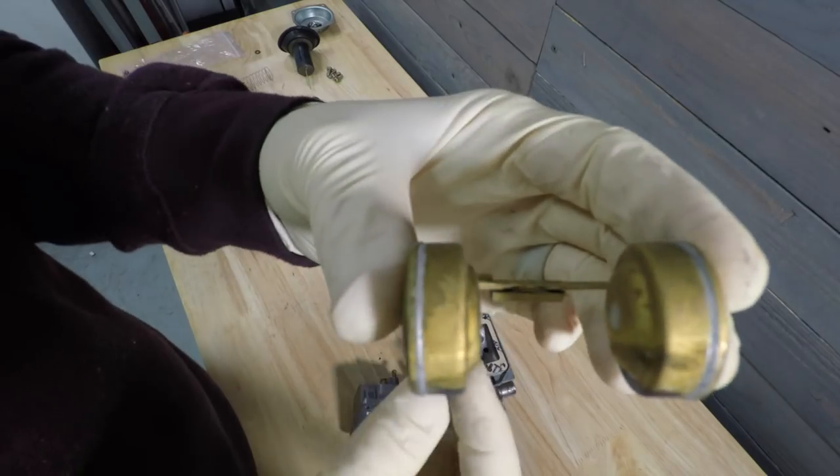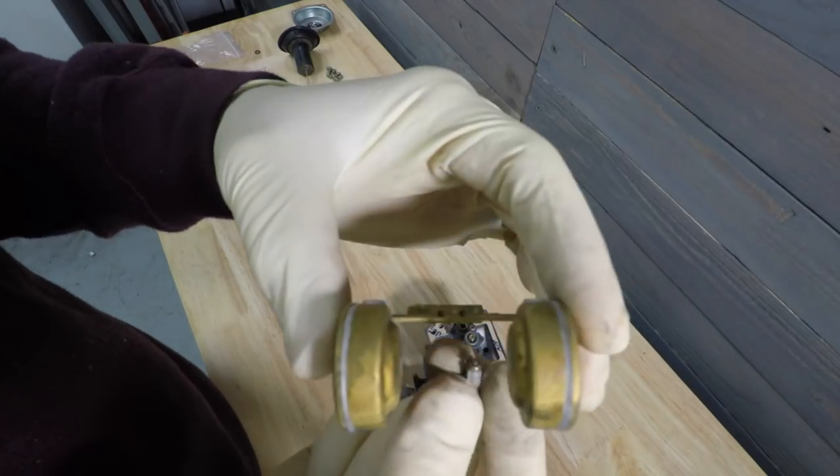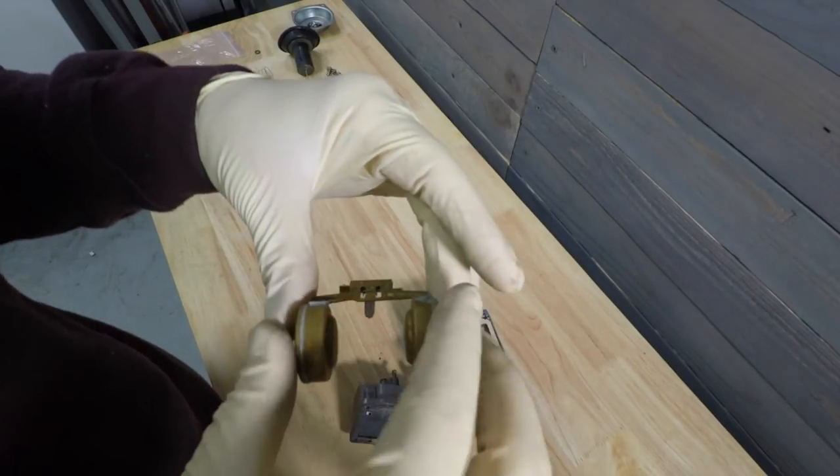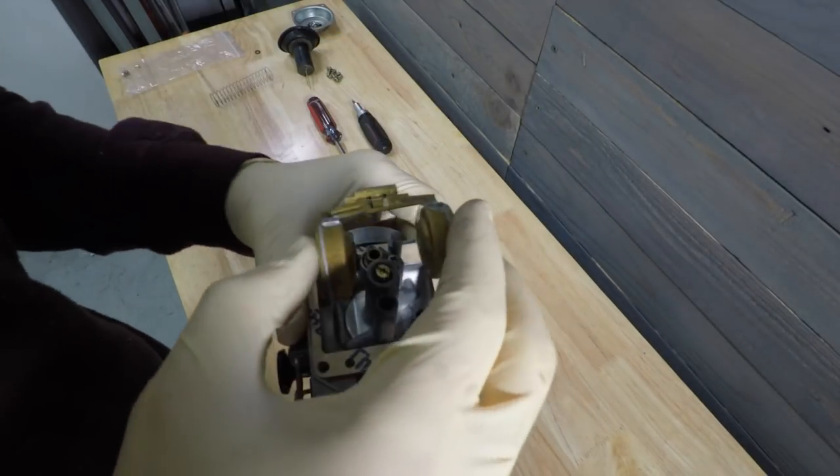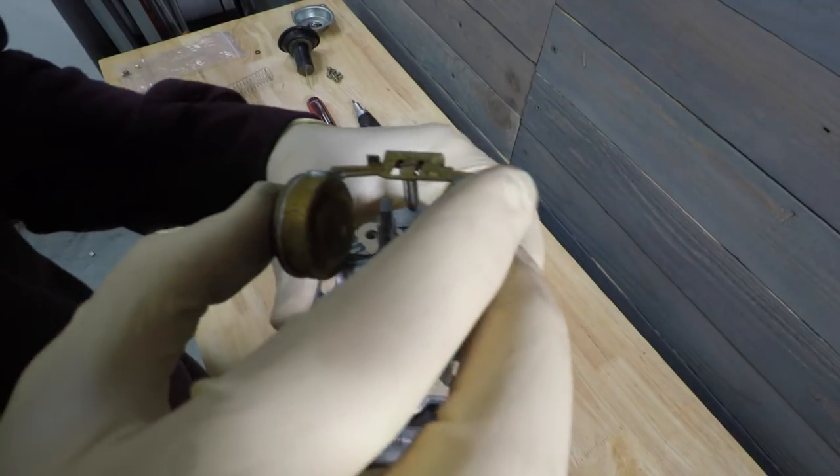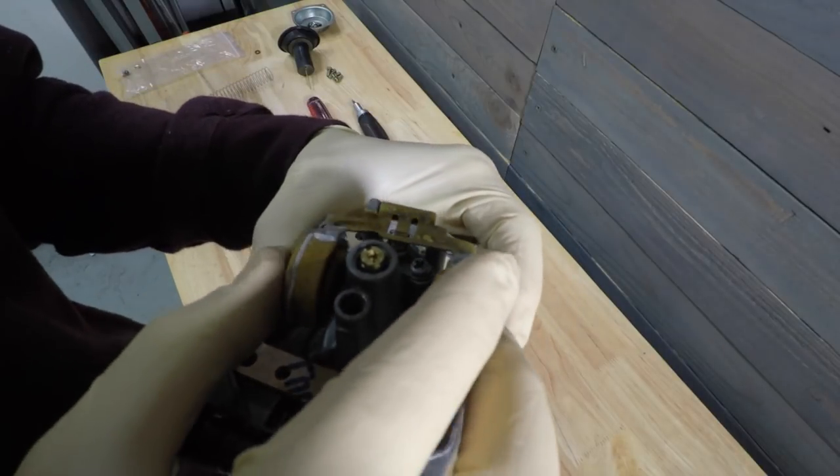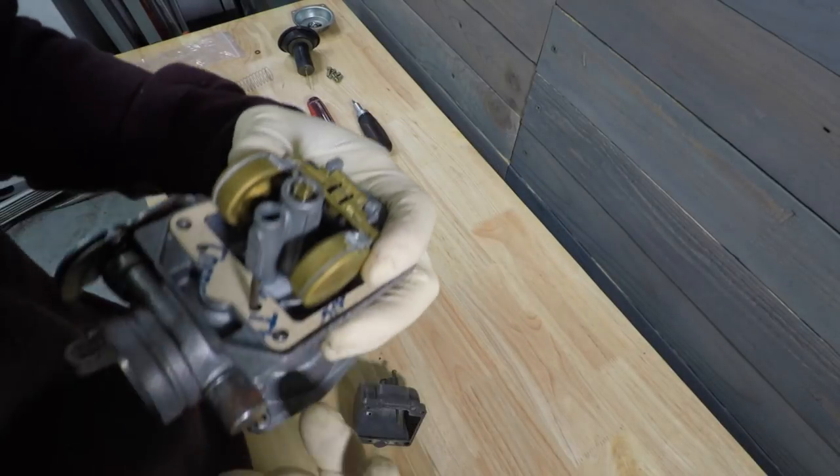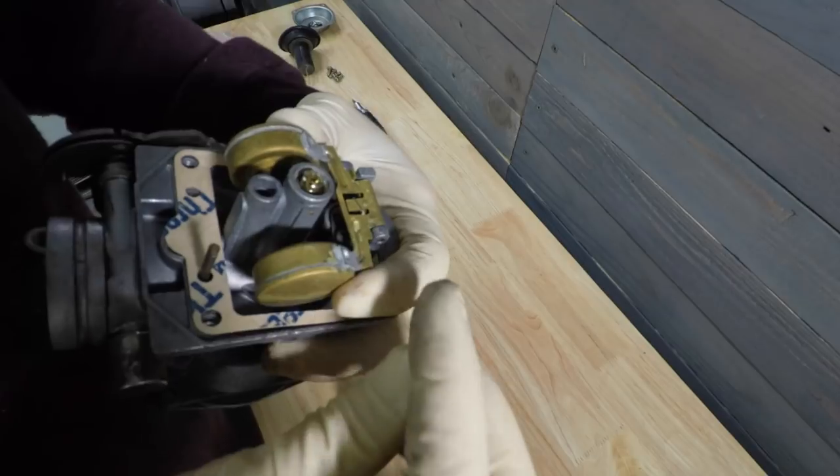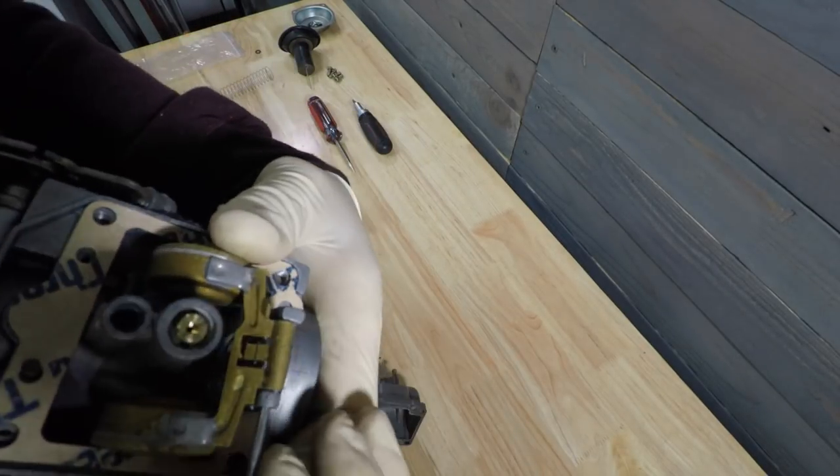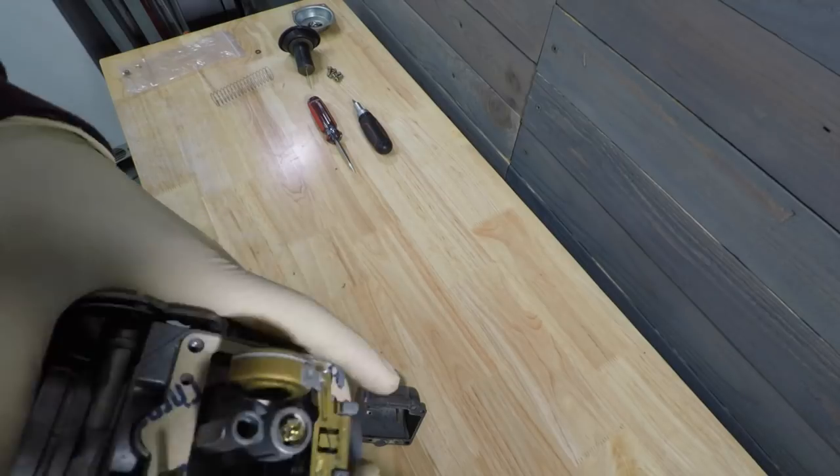And so you have a little tab right here on the float that the needle slides on. And then you install it to where the needle slides down that hole right there. And then you attach this little float pin like so.